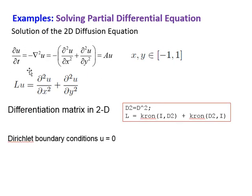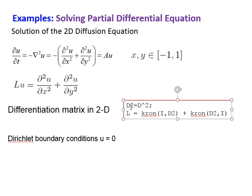Now we'll see an example of solving a partial differential equation: the 2D diffusion equation, which has the form du/dt = −L(u) where L is the Laplacian operator. We express the Laplacian using the kron command, and we use Dirichlet boundary conditions where u equals zero on the boundaries.